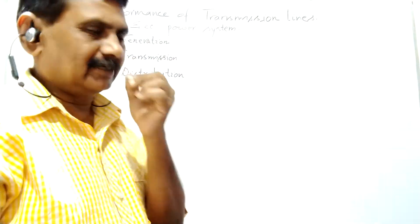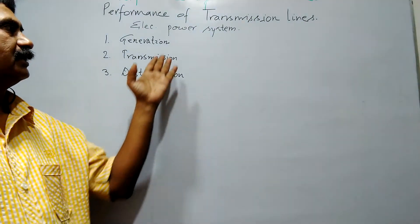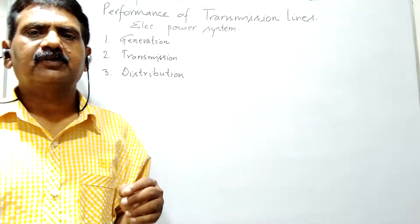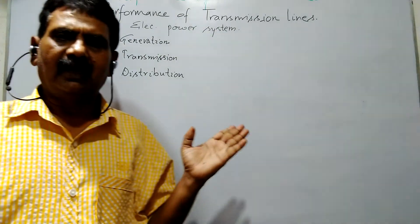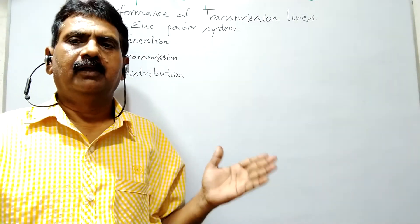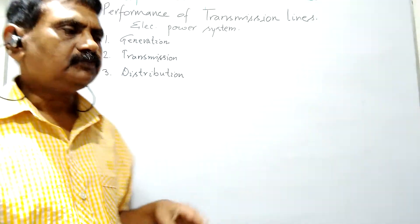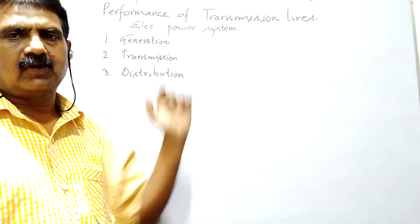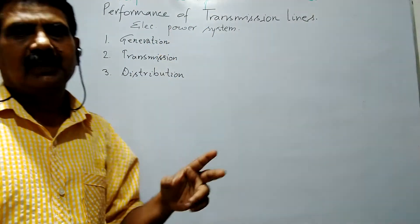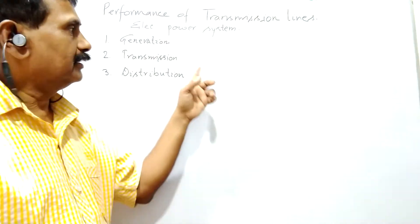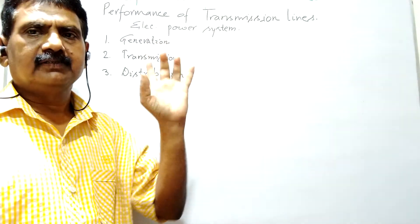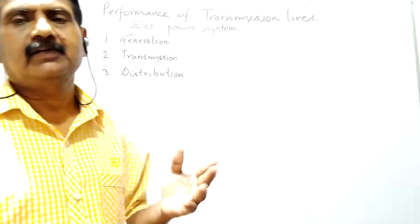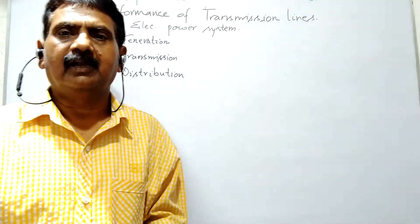Generation is related with the generation of electric power. Generally it is done at powerhouses — different powerhouses. For example: hydel, thermal, nuclear. You can see the transmission wire coming from the powerhouse. That is known as transmission line or overhead lines.